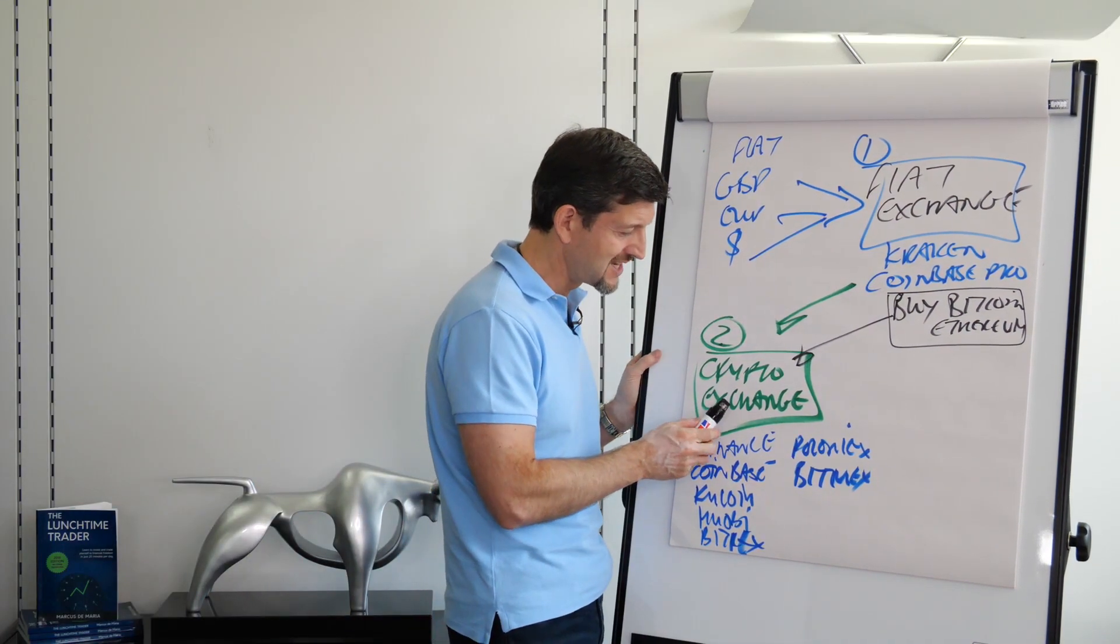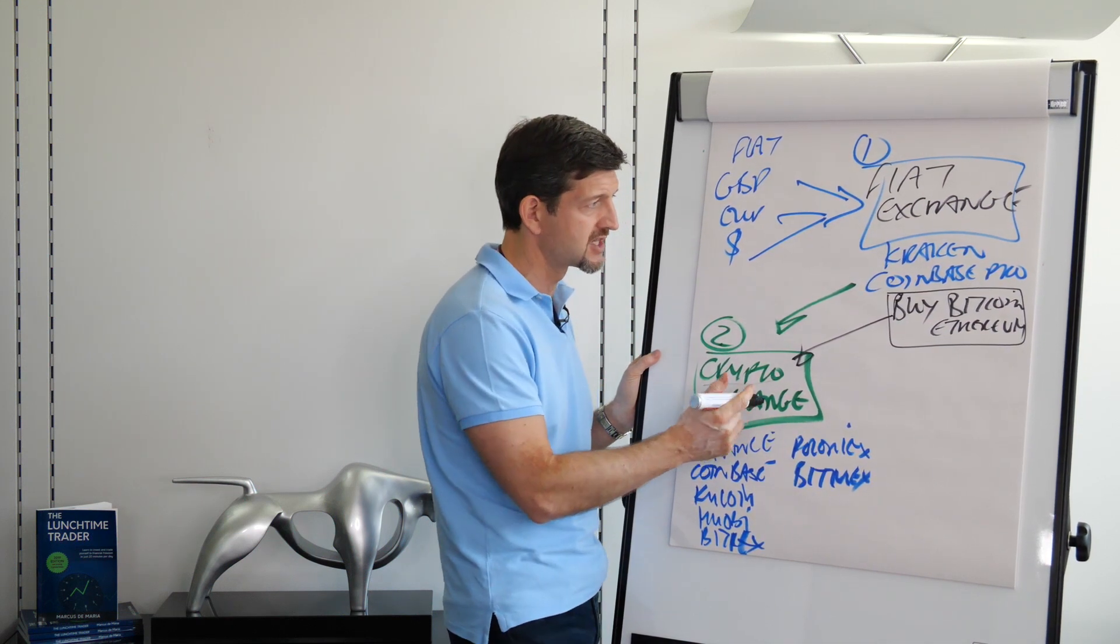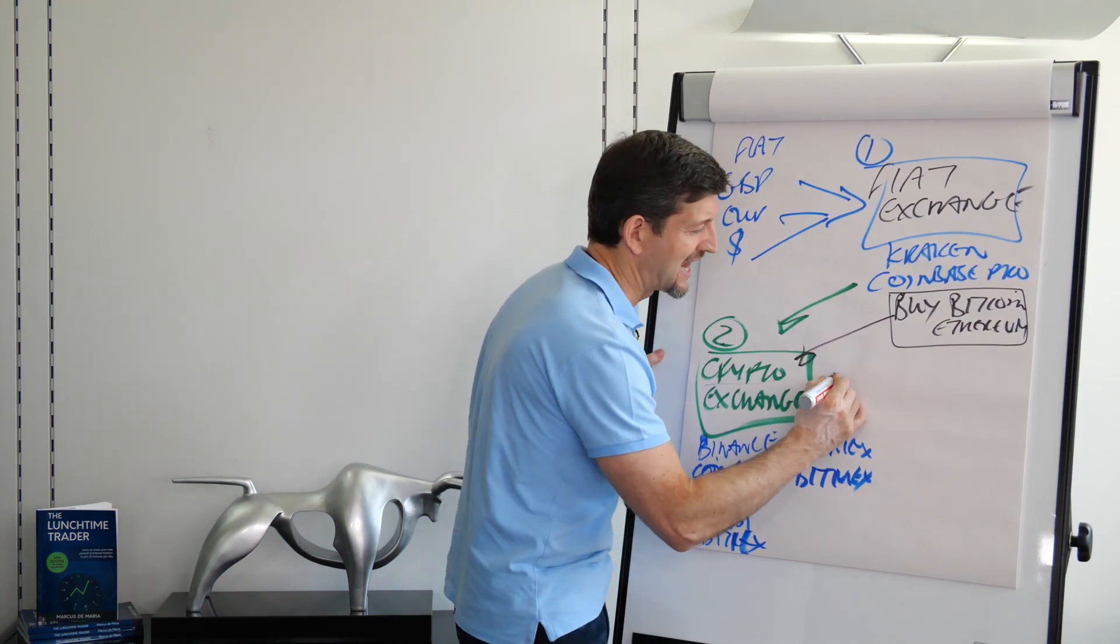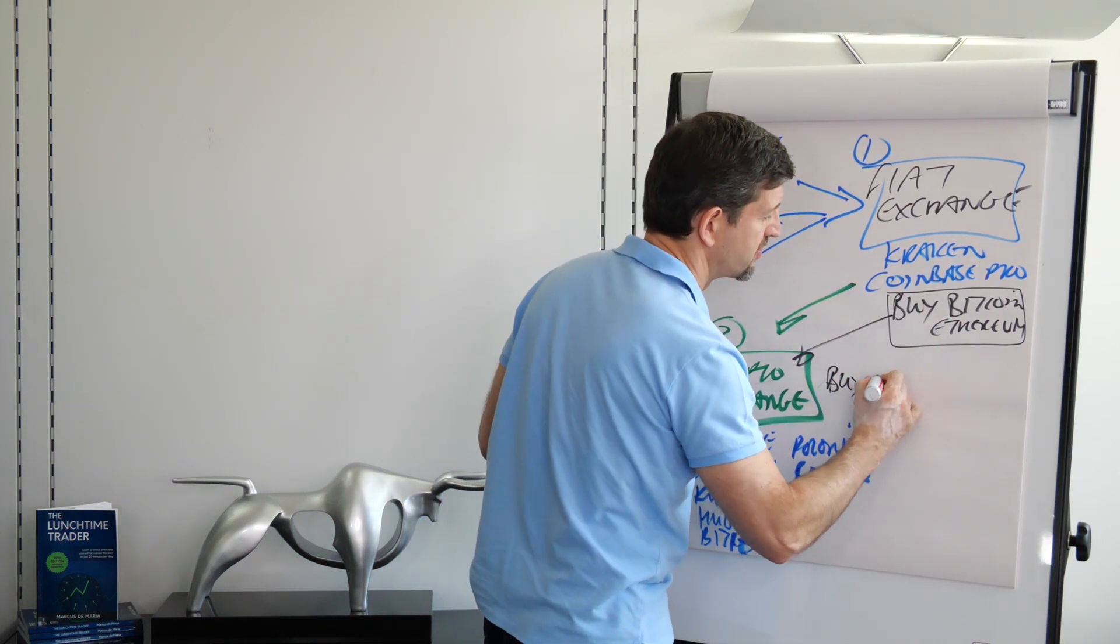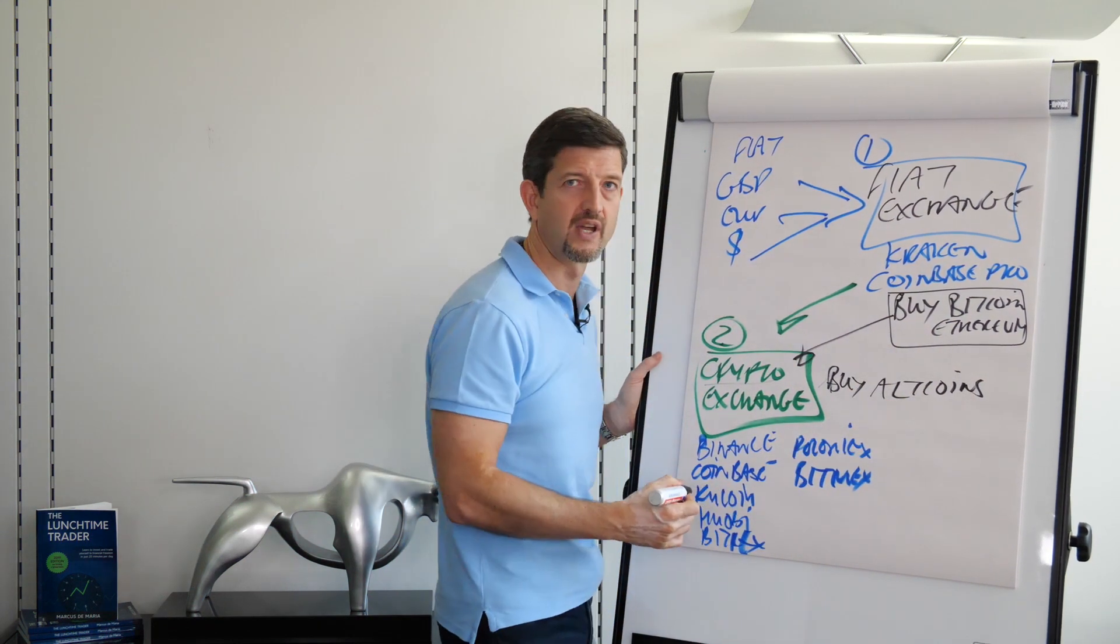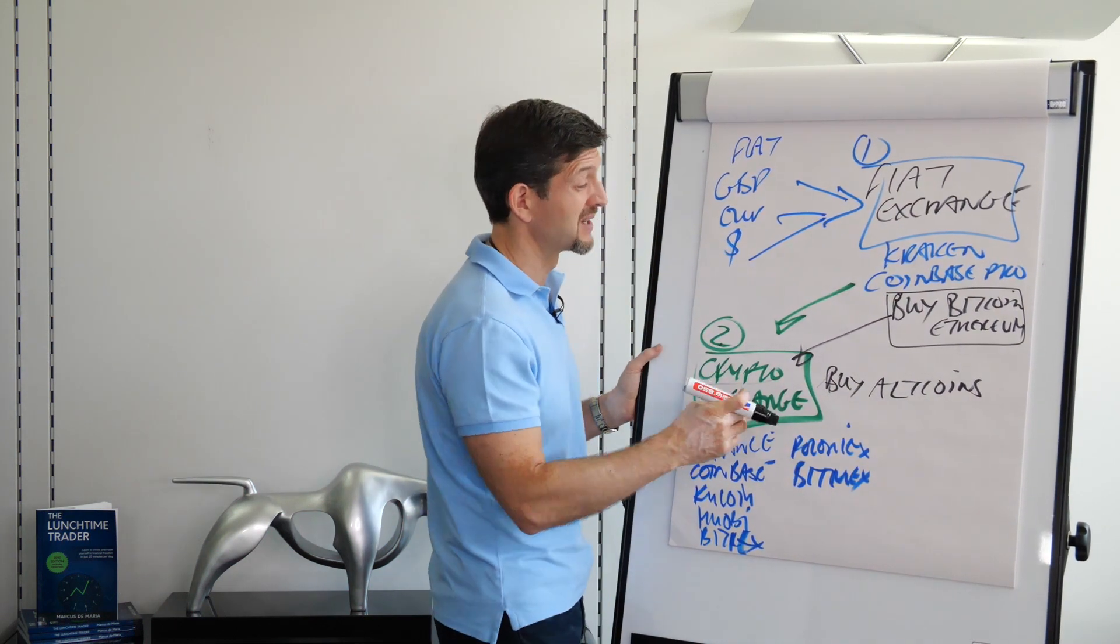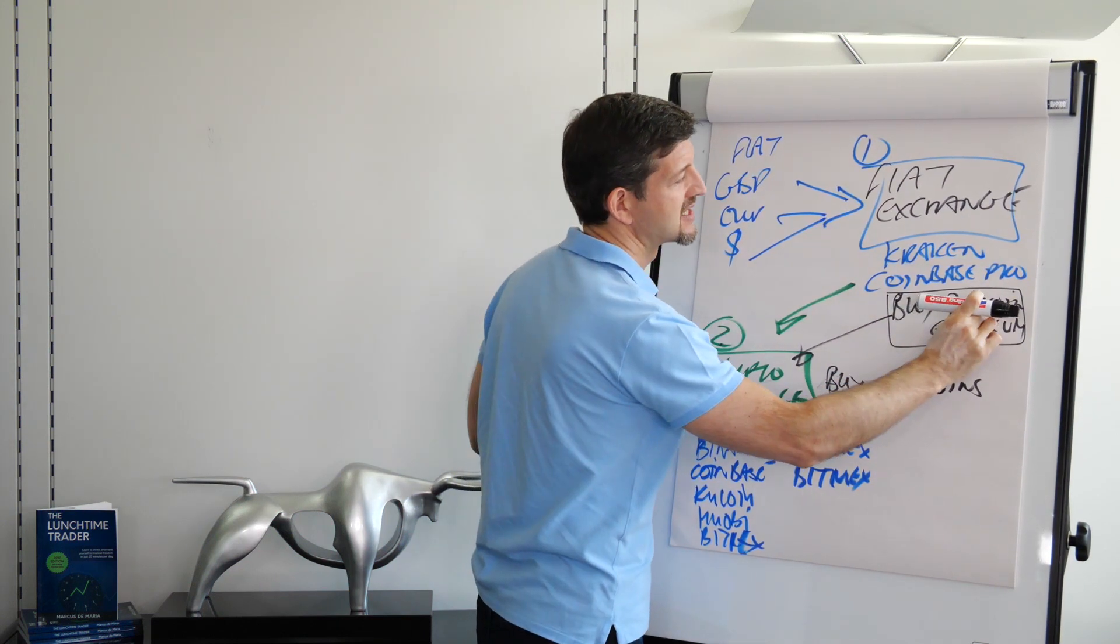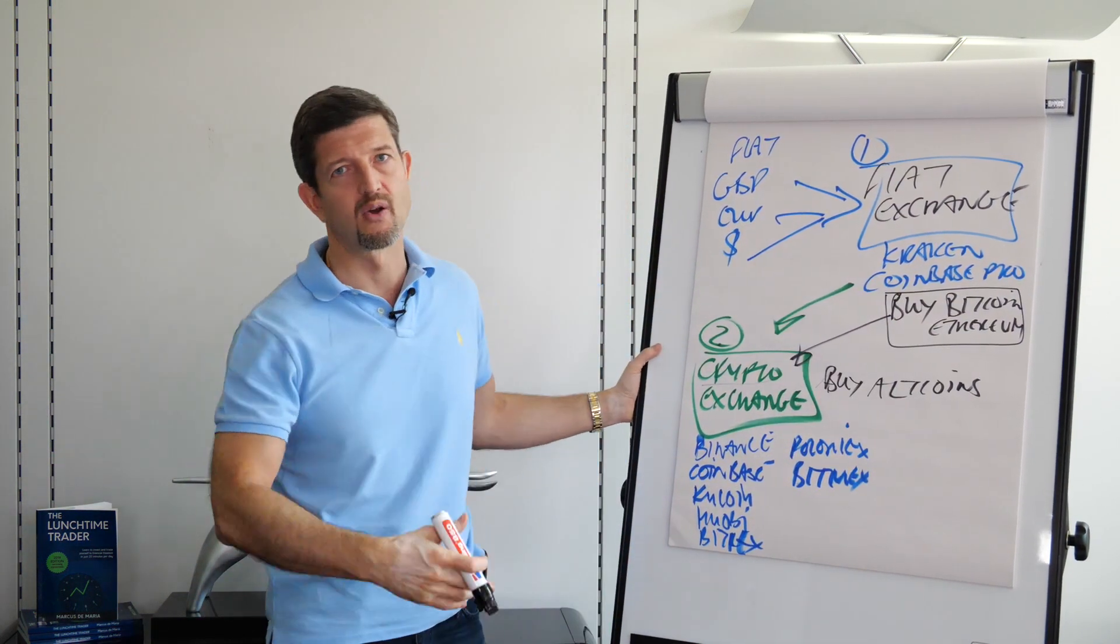Once it's on a crypto exchange, you're going to exchange one crypto for another. In other words, you're going to buy the altcoins with your Bitcoin if you want to - you don't have to, you can just stay with Bitcoin and Ethereum. Altcoins are alternative coins to Bitcoin and Ethereum, all the other coins that are out there.